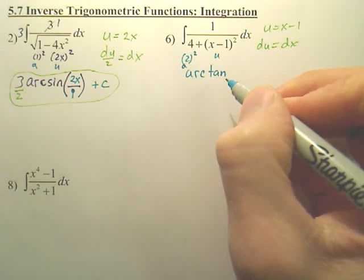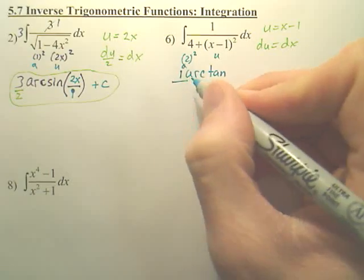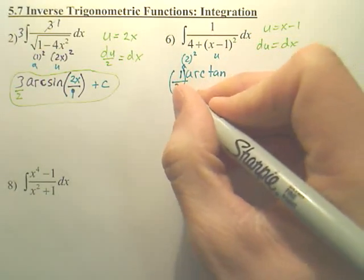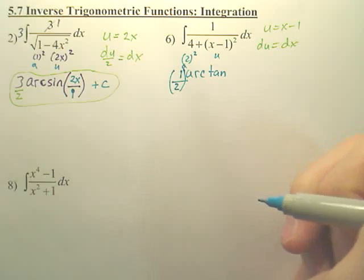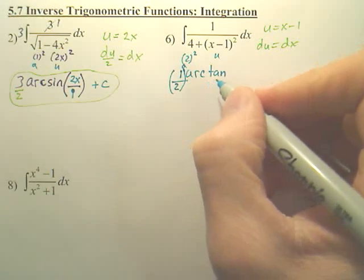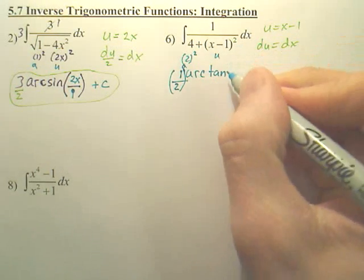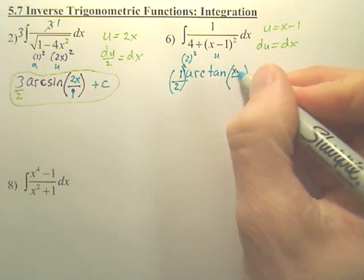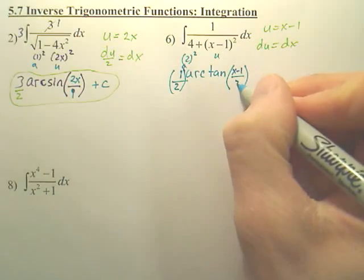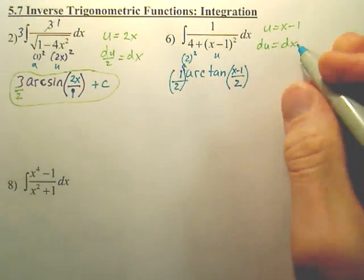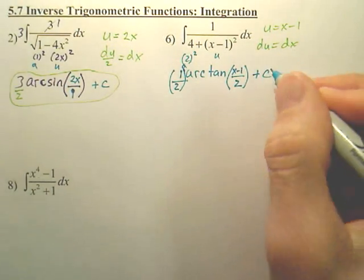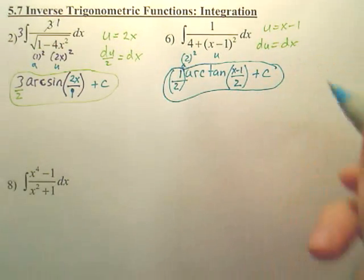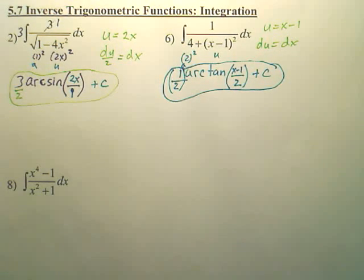So if this is arc tangent, according to the formula for arc tangent, you start off with 1 over a, which is 2. So you start with 1 over a, arc tangent. And then you do u over a, so u is x minus 1 over 2, plus c. You're done.